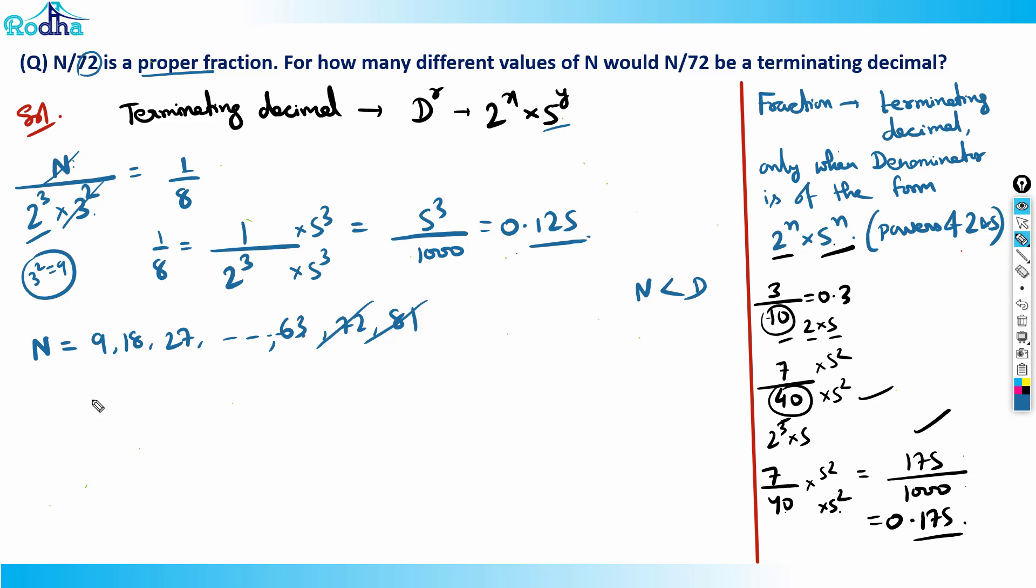So what is my answer? My answer is seven values: 9, 18... 9 × 1 till 9 × 7. We have got seven values as the answer for this question. So hope you got all the funda behind this question. Thank you.